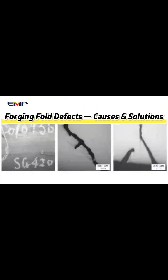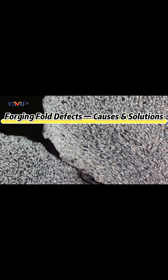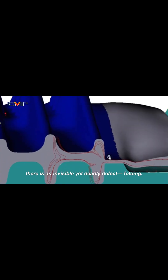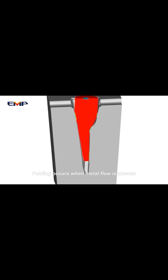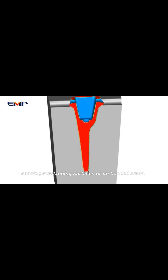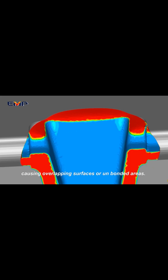Forging Fold Defects: Causes and Solutions. In forging, there is an invisible yet deadly defect — folding. Folding occurs when metal flow is uneven, causing overlapping surfaces or unbonded areas.